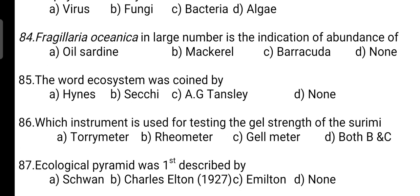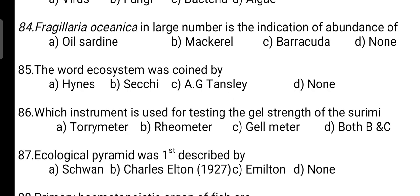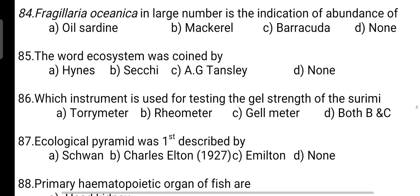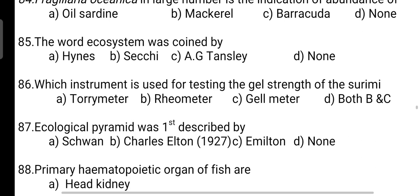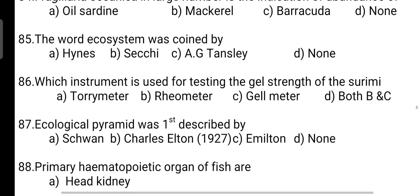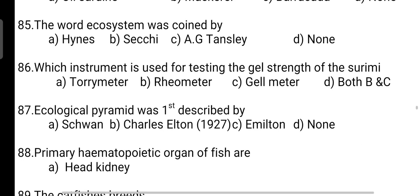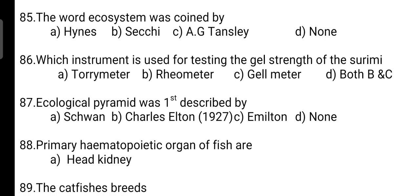Ferrojalaria osinica: next, Hjort's number is the indicator of abundance of? Correct answer is Option A — it is the indicator for abundance of oil sardine. This question is from the Handbook of Aquaculture.